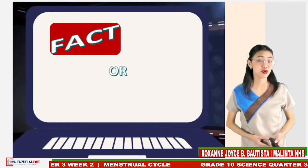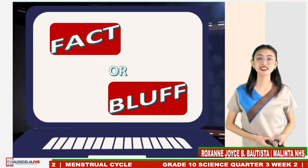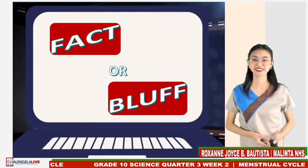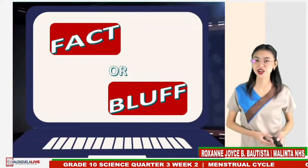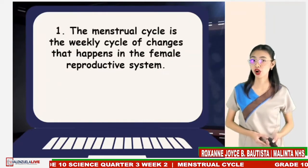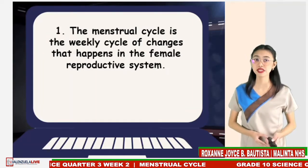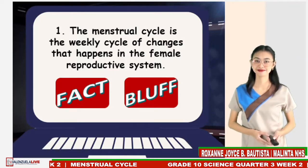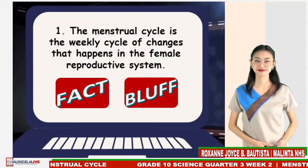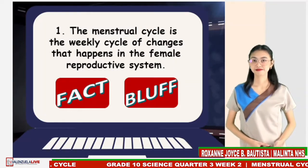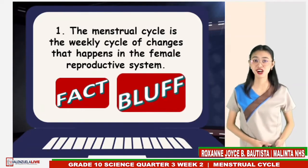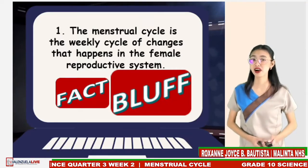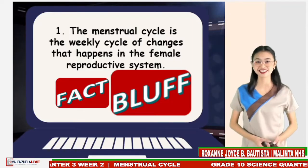To summarize our lesson for today, let's have an activity entitled Fact or Bluff. You will answer 'fact' if the statement is true and 'bluff' if it's not. For number one: the menstrual cycle is the weekly cycle of changes that happens in the female reproductive system — is it a fact or a bluff? The correct answer is bluff. Remember that the menstrual cycle is not a weekly cycle; rather, it is a monthly cycle of changes that happens in the female reproductive system.